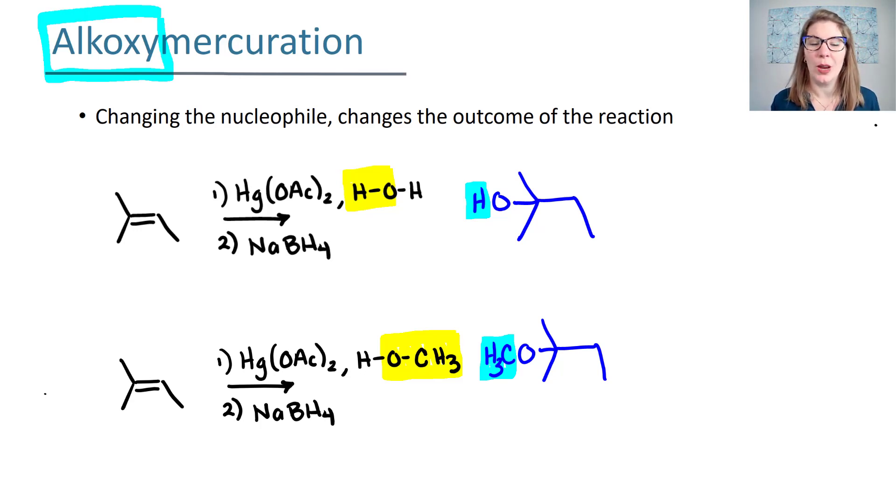What that means for you is you cannot just see, oh, Hg(OAc)2, putting oxygen and hydrogen on the more substituted side. You also have to look at the nucleophile. If the nucleophile is water, then yes, you're putting H and OH across the pi bond. If your nucleophile is an alcohol, then you're putting H and O-R, right? Whatever is here, this O-R group is going to add to the more substituted side of the pi bond.